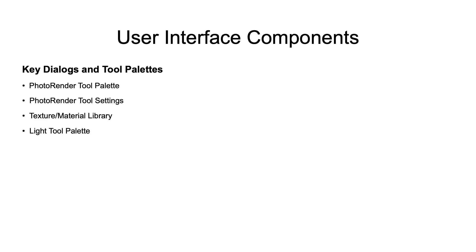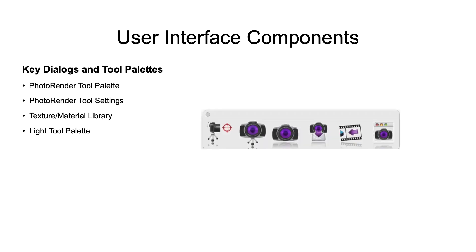Let's review the four key user interface components. The first item is the render tool palette, accessed from the menu bar under Tools > Photo Render. Use this tool palette to render or set up everything about your scene. This tool consists of create camera, render camera, render current view, render to file, recall last render, and render settings.